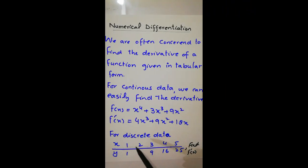But for the discrete data like given in the following table, the values of x are 1, 2, 3, 4, 5 and the corresponding values of y are 1, 4, 9, 16, 25.